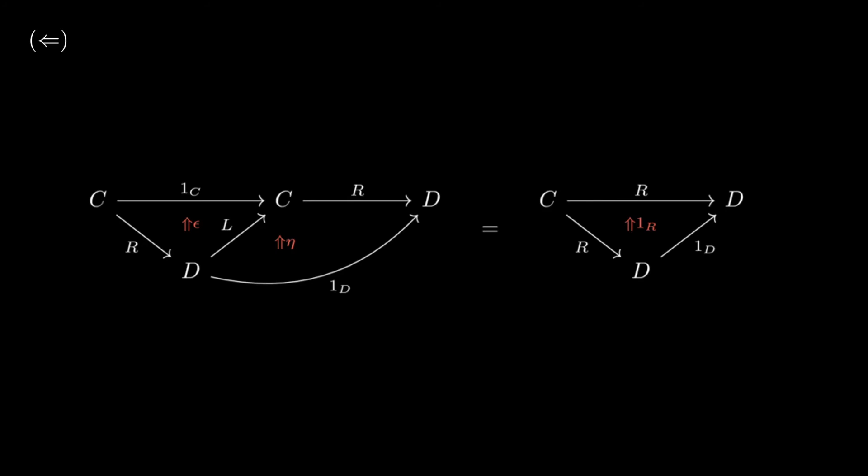We will want to show, of course, that LR is an adjunction with unit eta and counit epsilon. To do that, it suffices to show the triangle properties from before hold. But observe that,